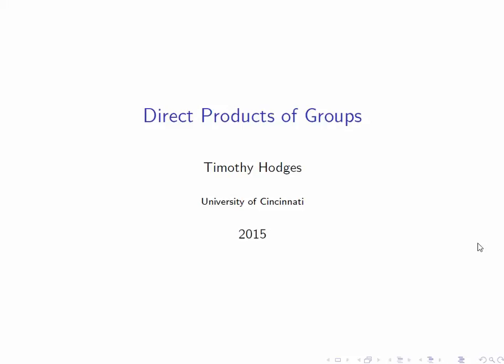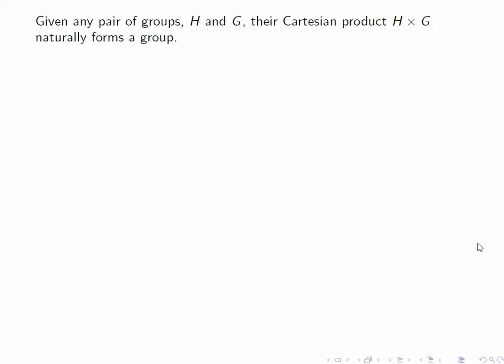Direct products of groups. Given any pair of groups, we can define a group structure on the Cartesian product.